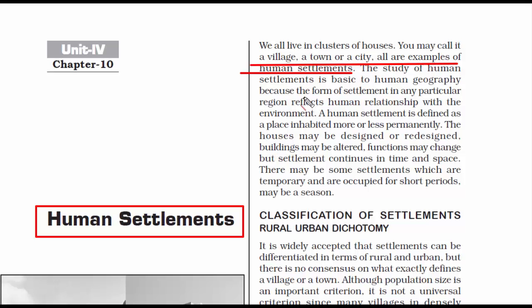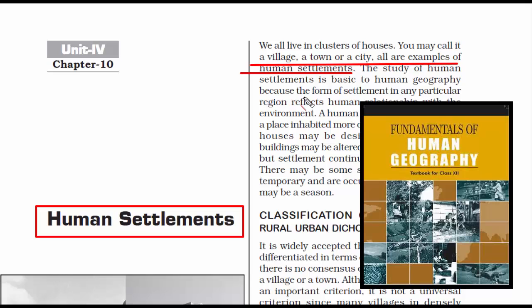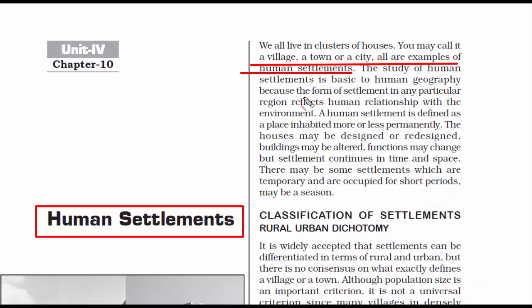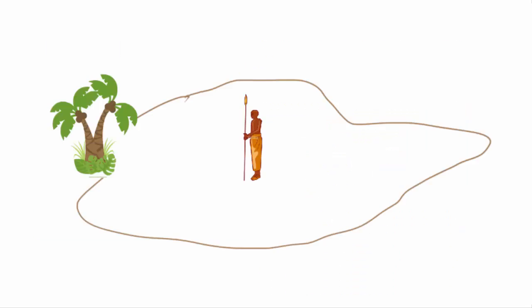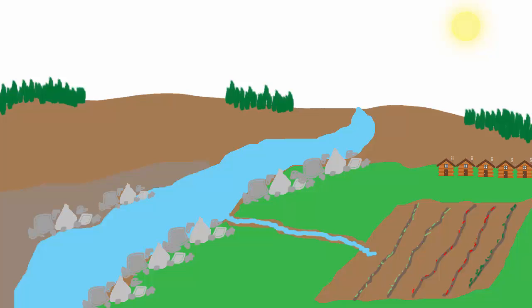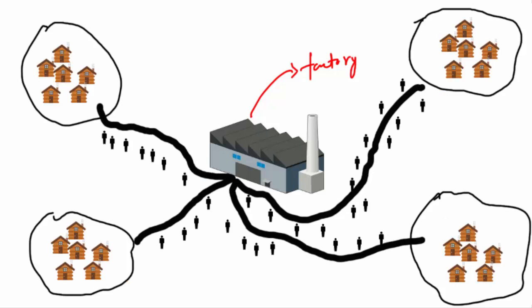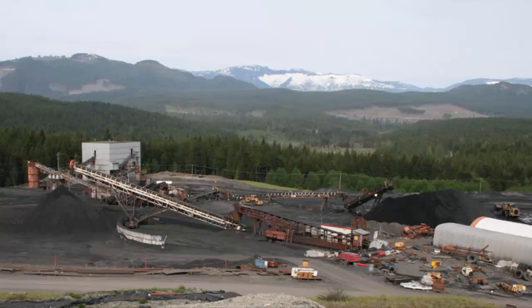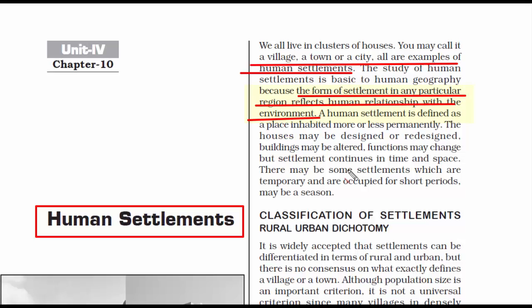This chapter brings out the essence of the entire book, which is named Fundamentals of Human Geography — so a chapter about human settlements is a mandatory topic. The study of human settlements is basic to human geography because the form of settlement in any particular region reflects human relationship with the environment. Tribal people stay where natural resources are available; farmers stay near fertile plains or water for irrigation; city dwellers stay where there are jobs; and factory locations depend on raw materials.